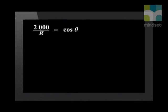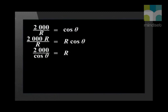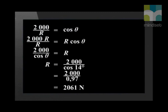2,000 newtons divided by R newtons is the cosine of angle theta. Multiply both sides of the equation by R, and then divide both sides by cosine theta. We know that theta is 14 degrees. With the calculator, we find that cosine 14 degrees is 0.97. So we get R equal to 2,061 newtons.